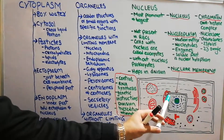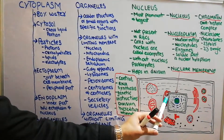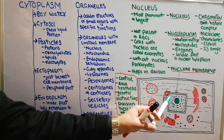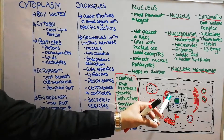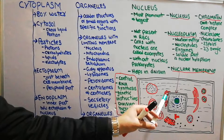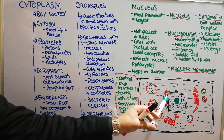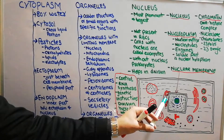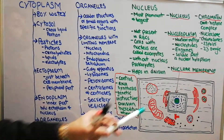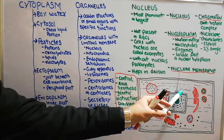The perinuclear space — the space between the two layers of the nuclear membrane — is continuous with the space of the endoplasmic reticulum. We will discuss the endoplasmic reticulum in detail, but at the moment you should remember that the perinuclear space is continuous not only with the endoplasmic reticulum but is also in touch with the cytoplasm.